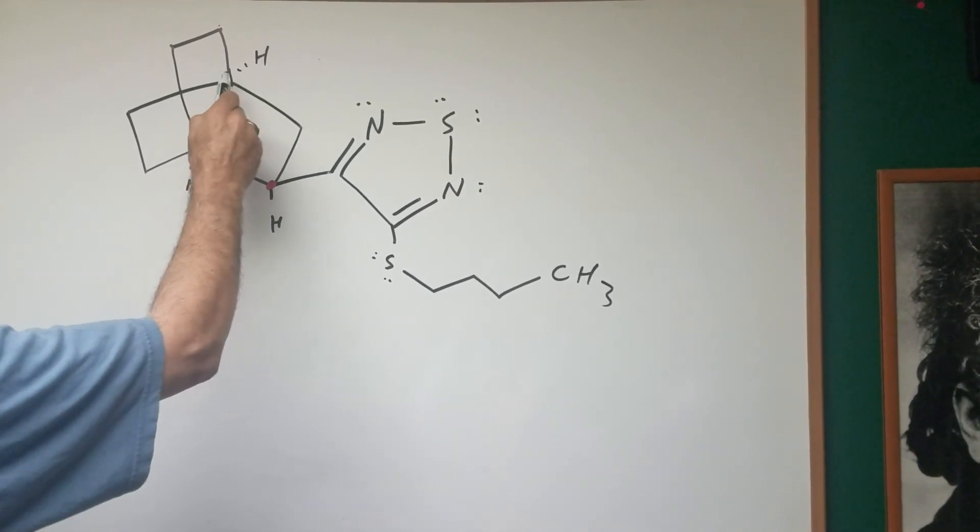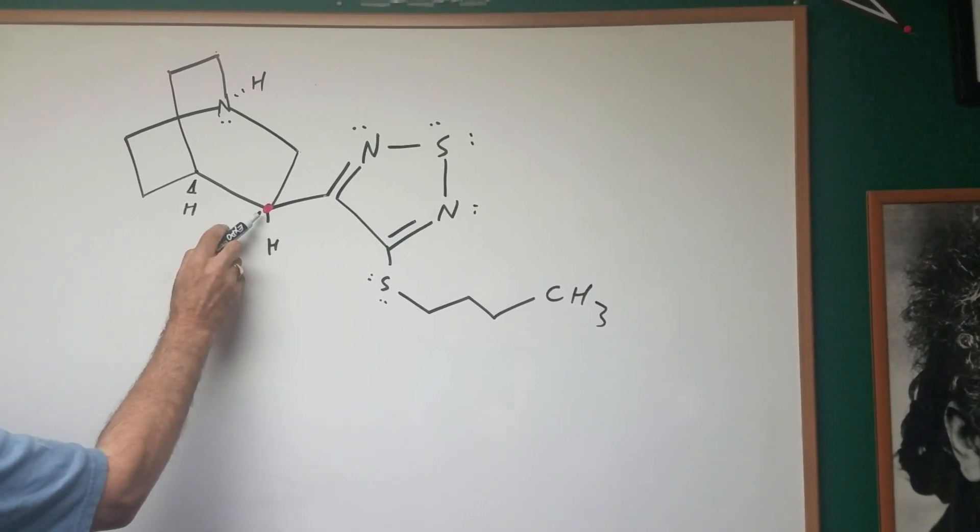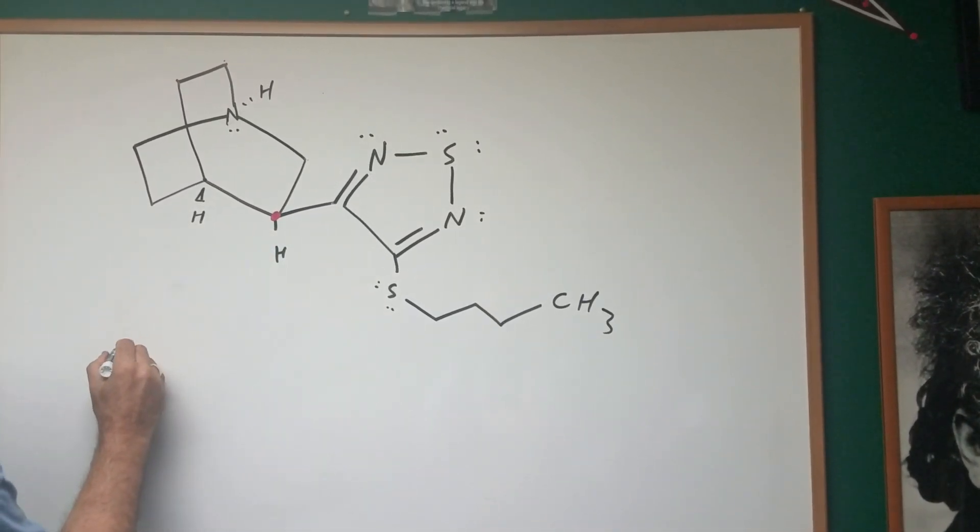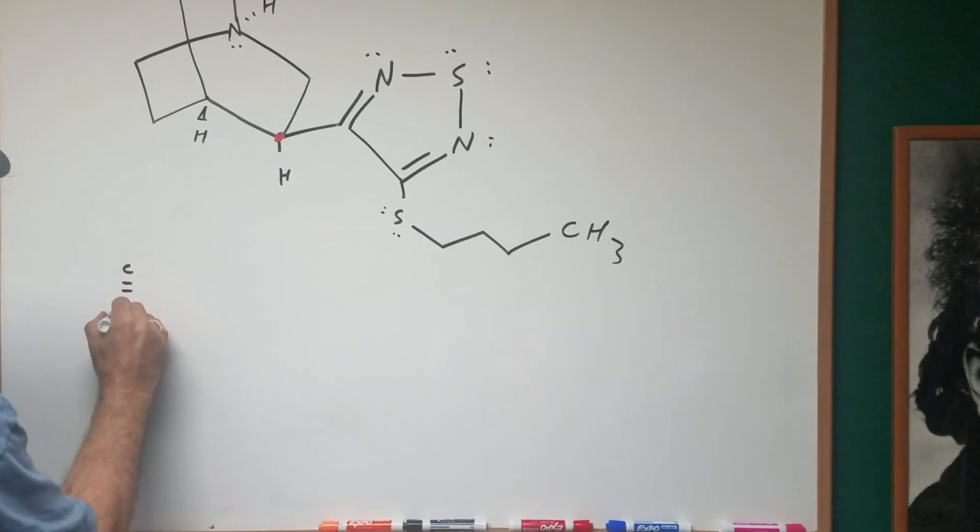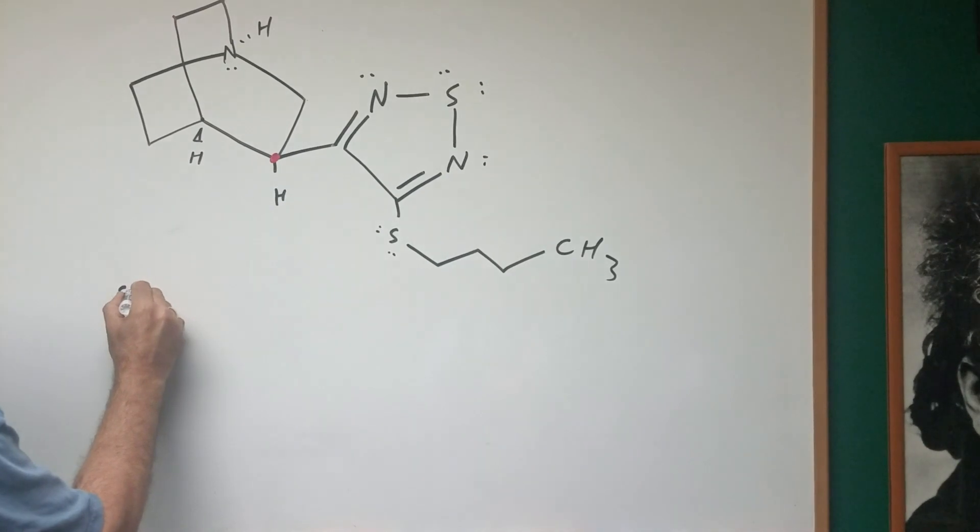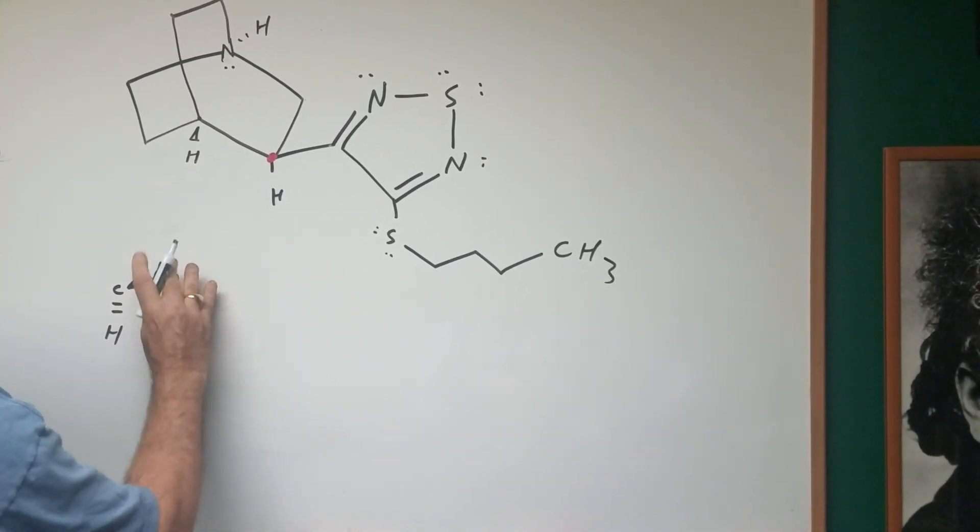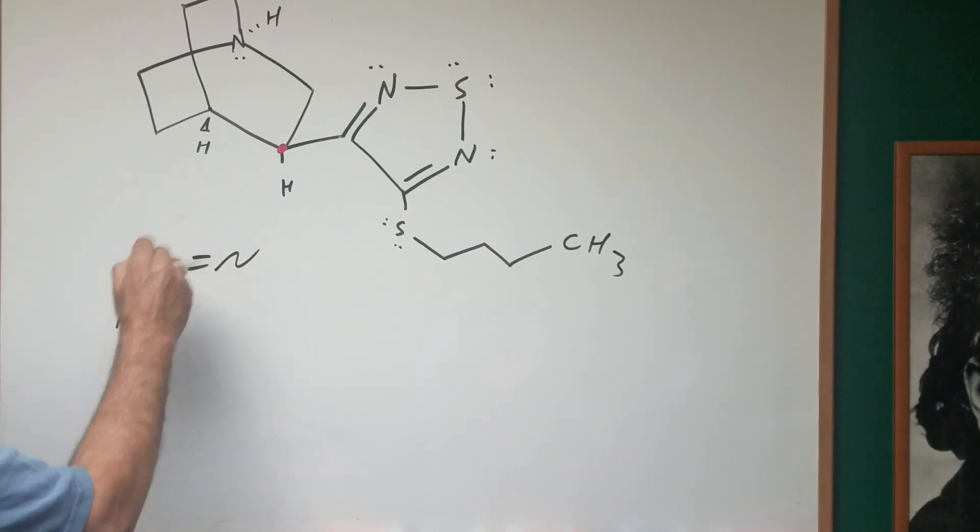The only area of chirality is right here. And watch what I'm going to do. The hydrogen is going downward, so I put it as a dash. Then you got this group going up, and that's going to be the carbon with the nitrogen. That's the carbon with the nitrogen.